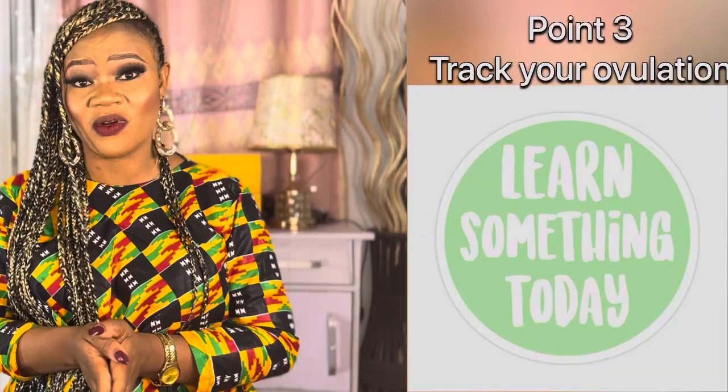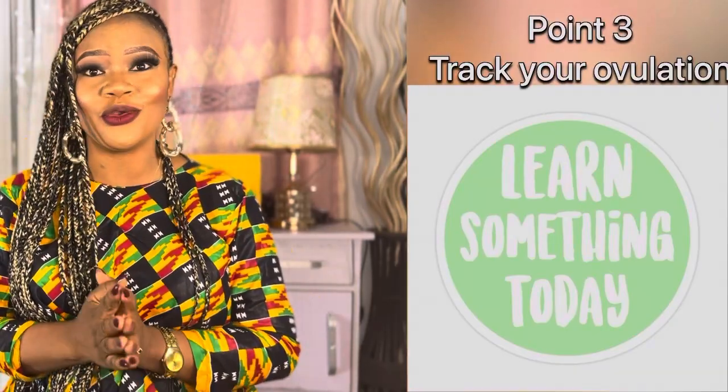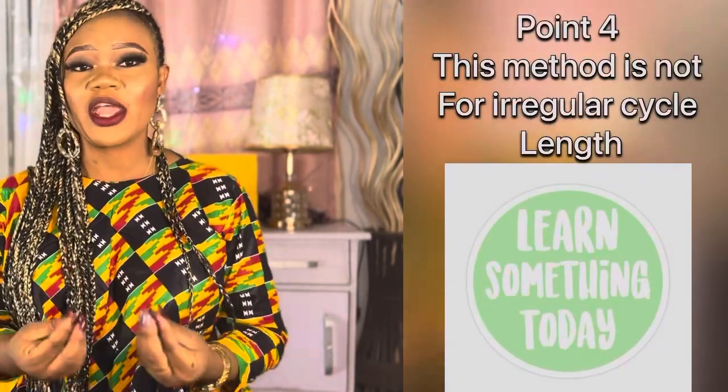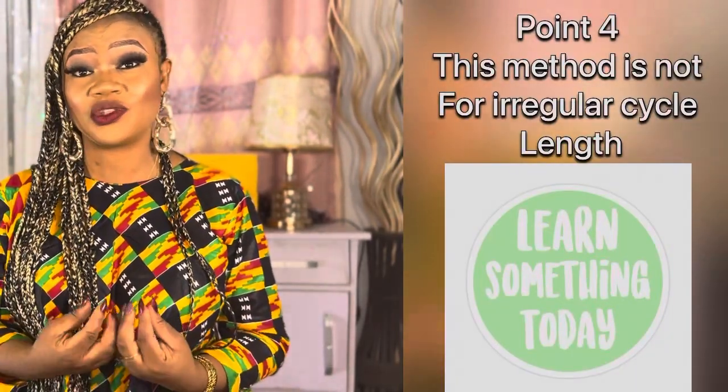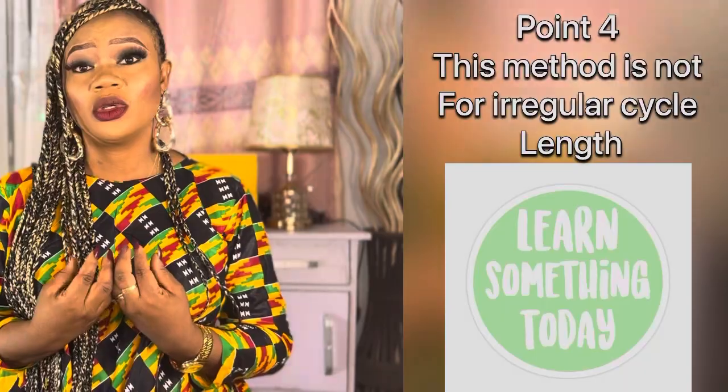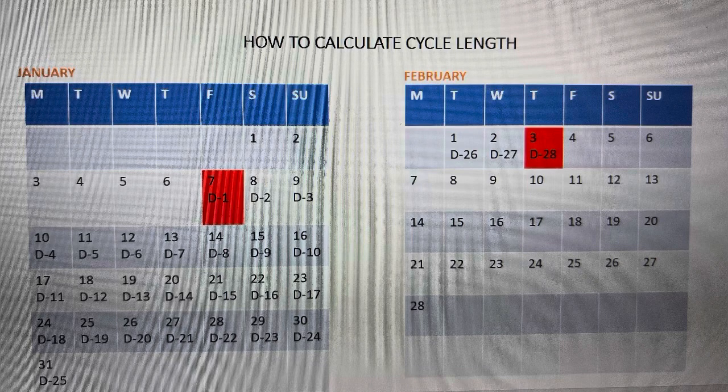Point number three: it is believed that if your cycle length is fairly regular, you're bound to ovulate on your mid-cycle. So if your cycle length is 28 days, on the 14th day you're bound to ovulate. Point number four: if your cycle length is short — say 21 days — or long — say once every two months — this calendar method is not going to work for you.